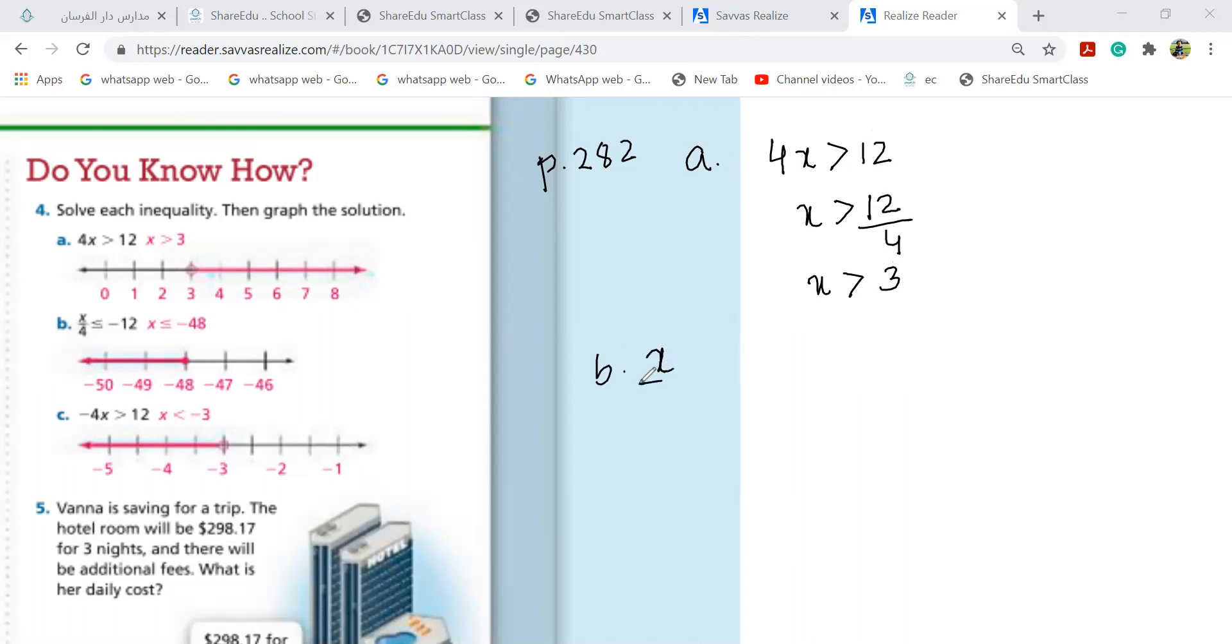X over 4 less than or equal to minus 12. I'm not going to change the sign because they don't have minus. If you're from minus, it goes there, then you can change the sign. So 4 goes there and becomes multiplication. X is greater than, less than or equal to minus 48. Put your 48 minus 40 and go to the left side.